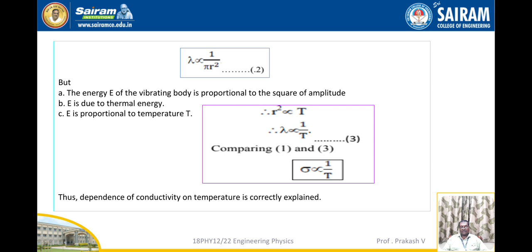The energy E of the vibrating body is proportional to the square of amplitude, and E is due to thermal energy, so E is proportional to temperature T. Therefore, R² is proportional to T, and λ is proportional to 1/T. Comparing equations 1 and 3, we get σ proportional to 1/T. Thus, the dependence of conductivity on temperature is correctly explained.